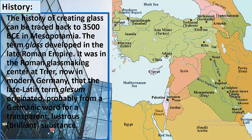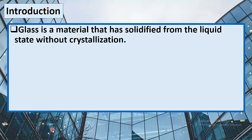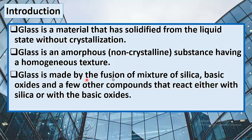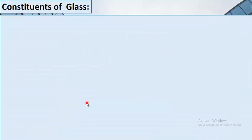Introduction: Glass is a material that has solidified from the liquid state without crystallization. Glass is an amorphous, non-crystalline substance having a homogeneous structure. Glass is made by the fusion of a mixture of silica, basic oxides, and a few other compounds that react either with the silica or with the basic oxides.